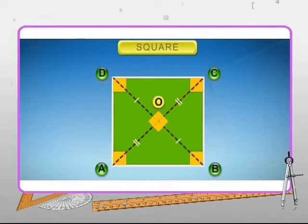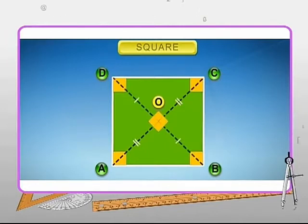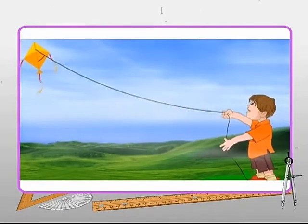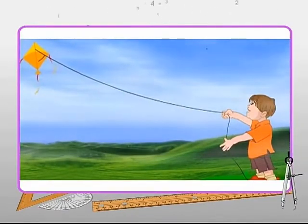In the diagram, the diagonal AC is equal to the diagonal BD, and angle AOB, angle COD, angle BOC, and angle AOD are each equal to 90 degrees. Thus AO is equal to OC and DO is equal to OB.